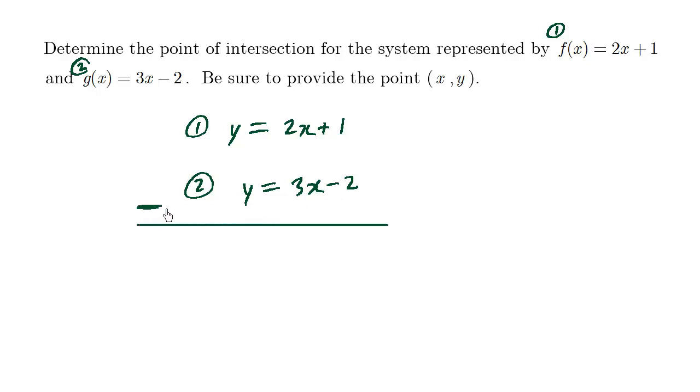If I'm to subtract these two equations, I'm going to go bottom minus top. So y minus y becomes 0, nothing. 3x minus 2x, we can subtract either way, top minus bottom, bottom minus top.